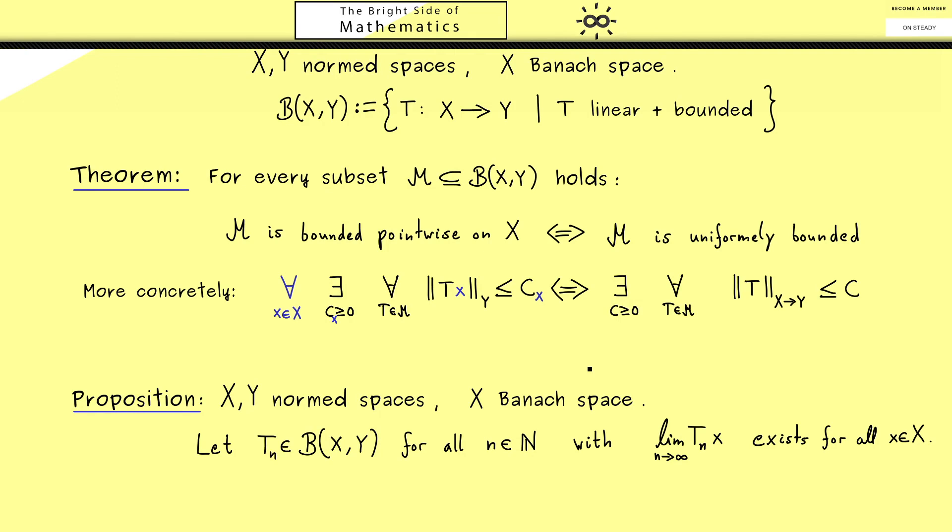Let's write it down: T defined as the pointwise limit, so a map from X to Y with Tx as the limit Tₙx. Then the result is T is also a linear and bounded operator. Of course linear is not so surprising, but bounded is because it means continuous.